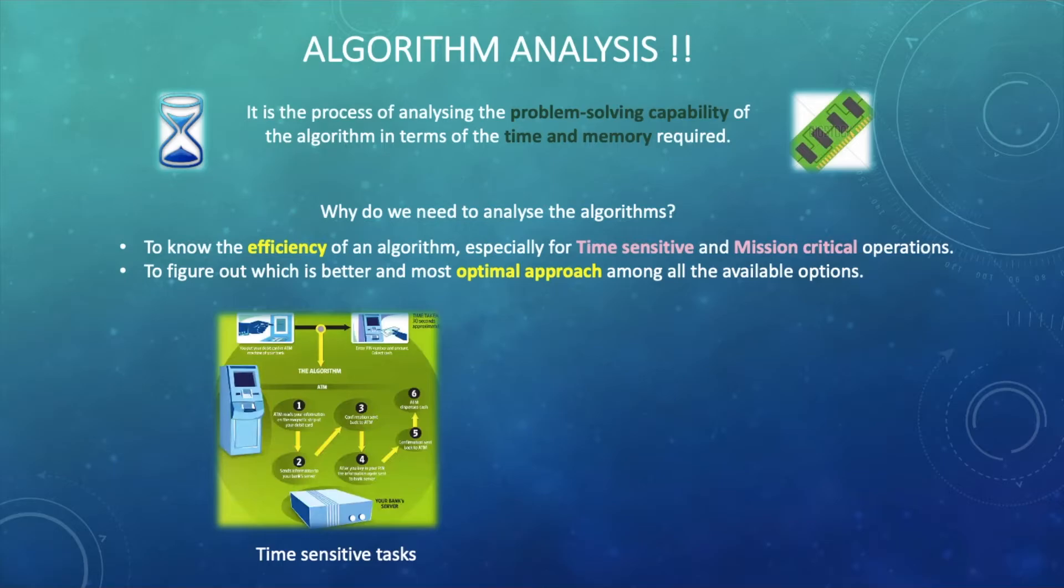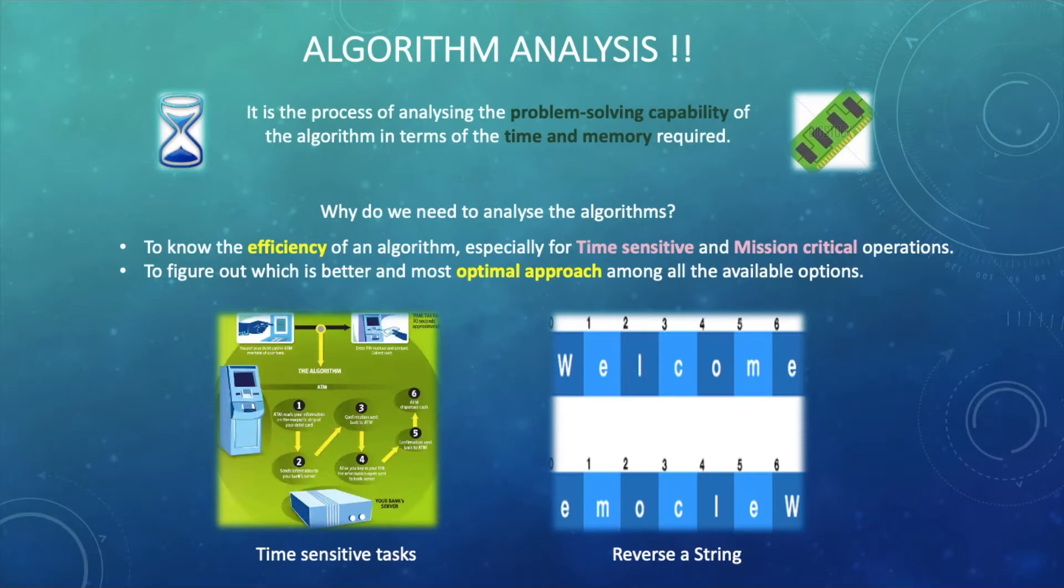And the second reason for doing algorithm analysis is to figure out the better and the most optimal approach among the potential solutions that we can find out only after analyzing all the possible approaches. For example we can reverse a string in n different ways. Here all the possible ways have same input that is original string and produce the same output that is reverse string but by following different approaches which in turn will have different efficiency. So when there are multiple approaches and we need to decide which approach suits best to our need, the algorithm analysis comes for rescue and helps in comparing different approaches.